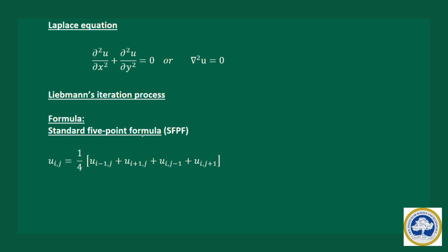The standard five-point formula is used to find a particular value of u at point (i, j). It is given by: u(i,j) = (1/4) × [u(i−1,j) + u(i+1,j) + u(i,j−1) + u(i,j+1)]. This is simply the average of 4 values.